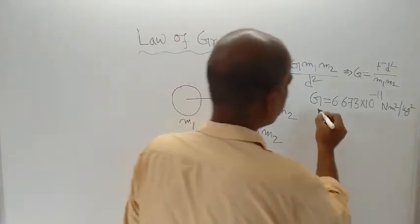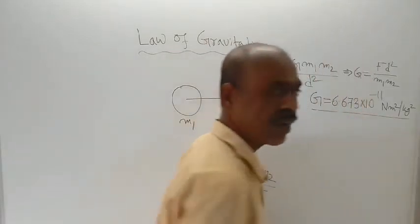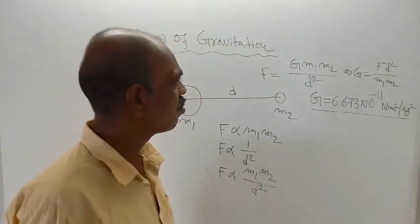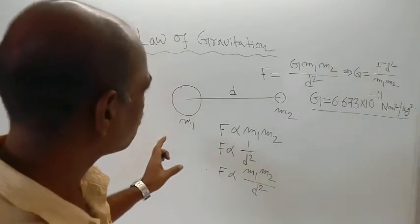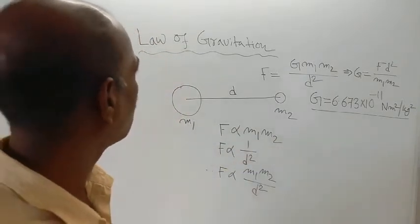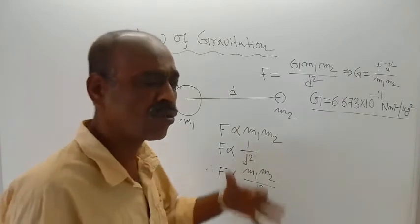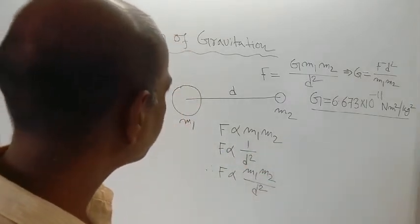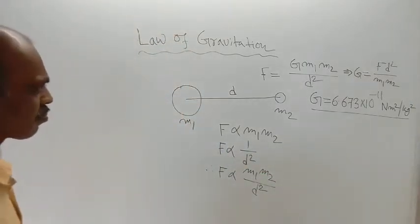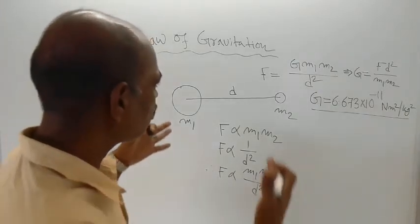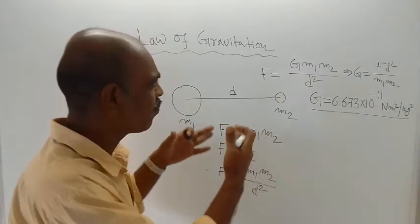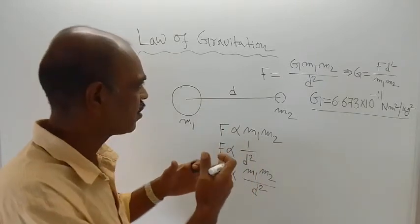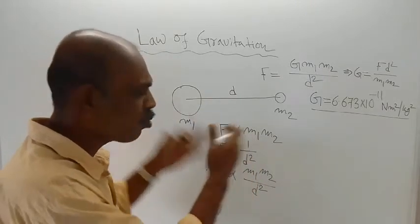This is the value of G experimentally found by Lord Cavendish. This is all about the law of gravitation, or Newton's universal law of gravitation. Now, this force of attraction F is equally felt by both objects.